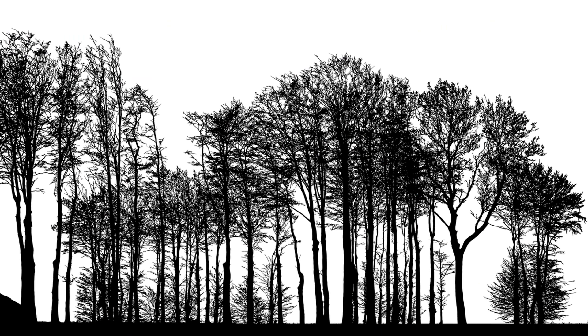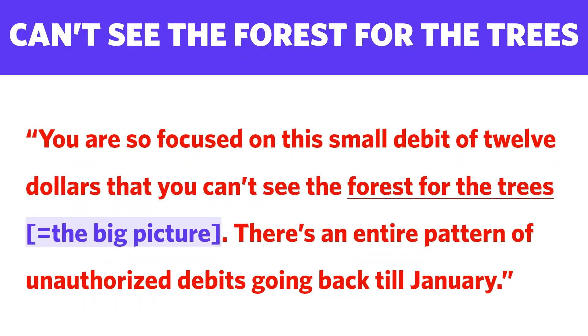Let's see an example. 'You are so focused on this small debit of $12 that you can't see the forest for the trees. There is an entire pattern of unauthorized debits going back till January.' It means that you are focusing only on $12, but there is an entire pattern of such debits since January.